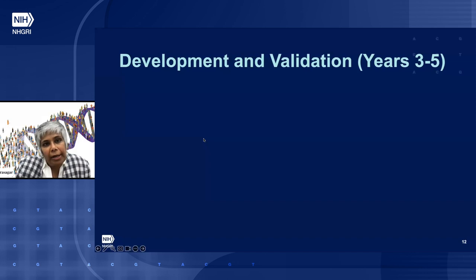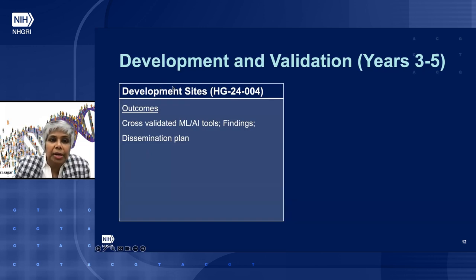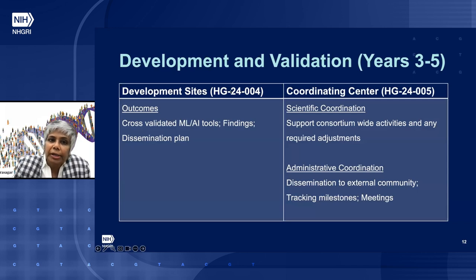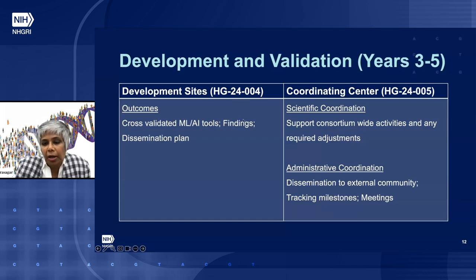During development and validation in years three to five, the outcomes of development sites are the cross-validated MLAI tools, findings including gaps and best practices, and the dissemination plan. The coordinating center will continue to support consortium-wide activities, with administrative coordination including dissemination to the external community, tracking milestones, and meetings.